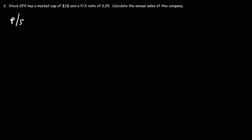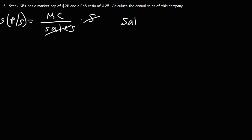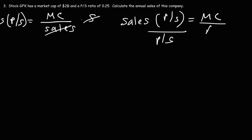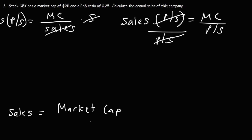We need to rearrange the formula. We know that the price-to-sales ratio is the market cap divided by the sales. But if we want to calculate the sales, we do some algebra: multiply both sides by the sales, giving us sales times the PS ratio equals the market cap. Then dividing both sides by the PS ratio gives us the formula we need: sales equals the market cap divided by the PS ratio.